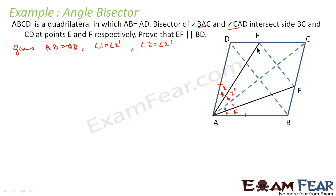How do we approach this question? If we have to prove that EF is parallel to BD, then if we can somehow prove that CF by DF is equal to CE by BE, it solves the purpose. Let's label these segments as X, Y, X dash, and Y dash. If we can prove that X by Y equals X dash by Y dash, our problem is solved — that's the best way to prove EF is parallel to BD.